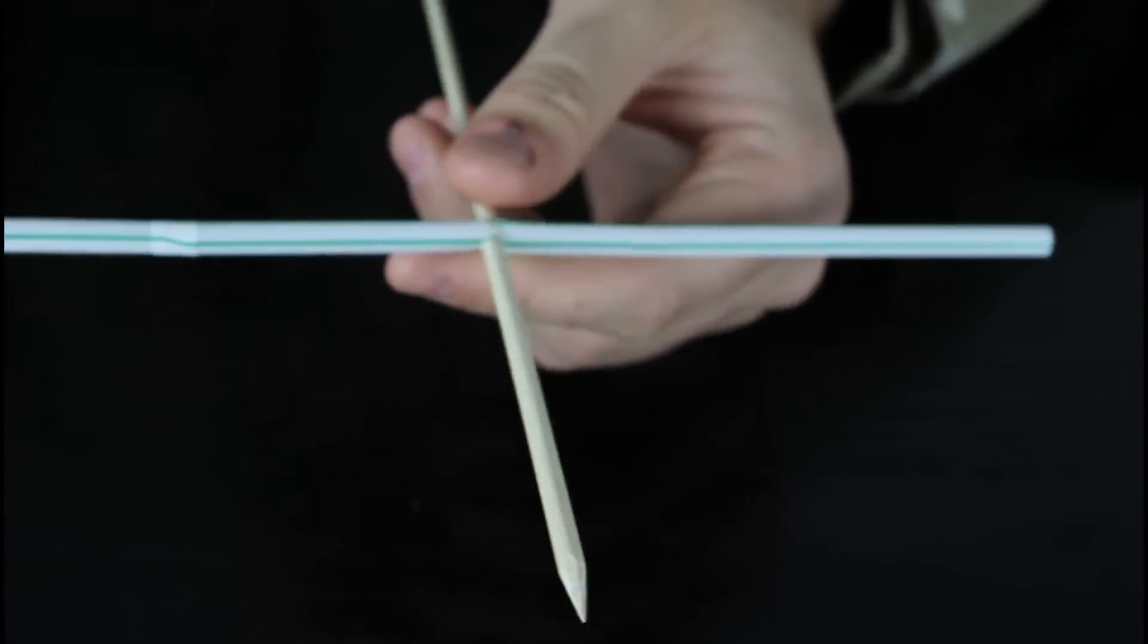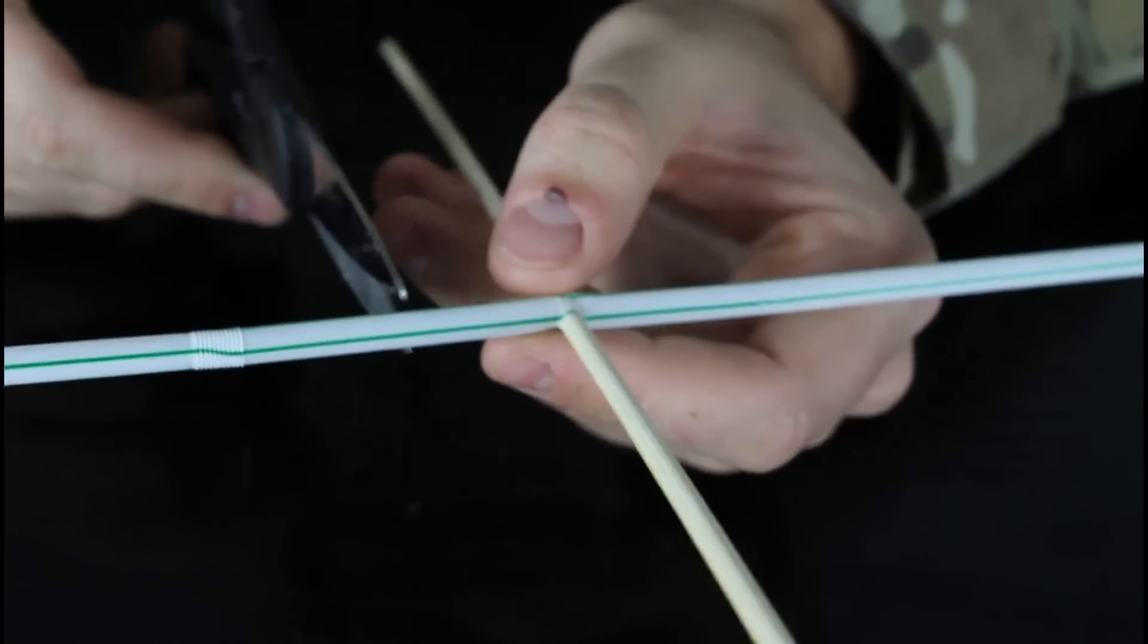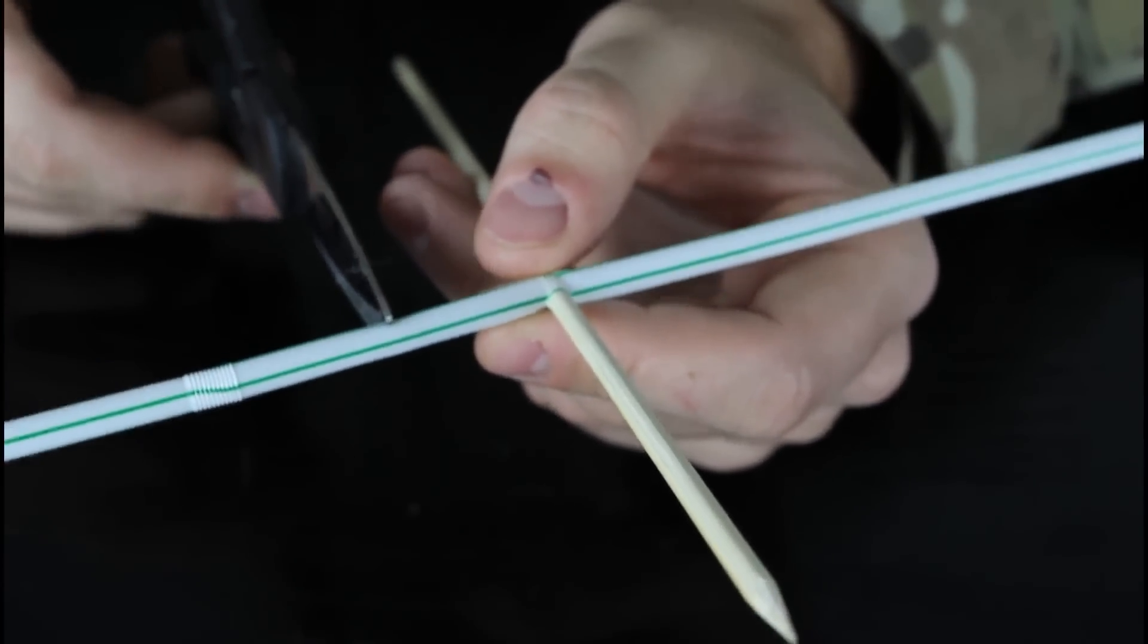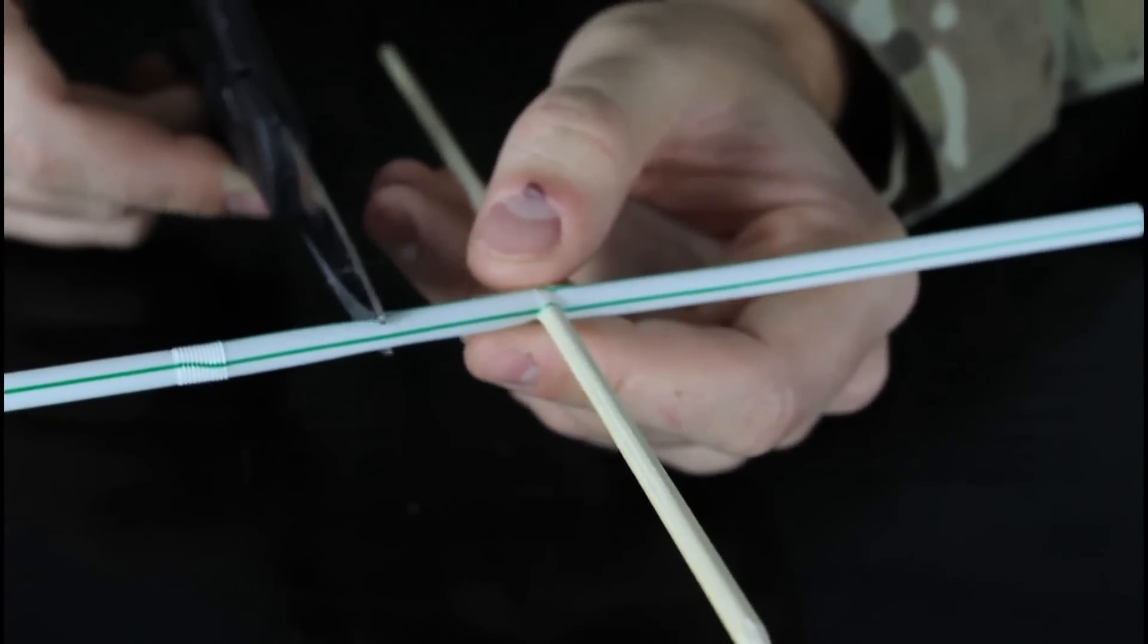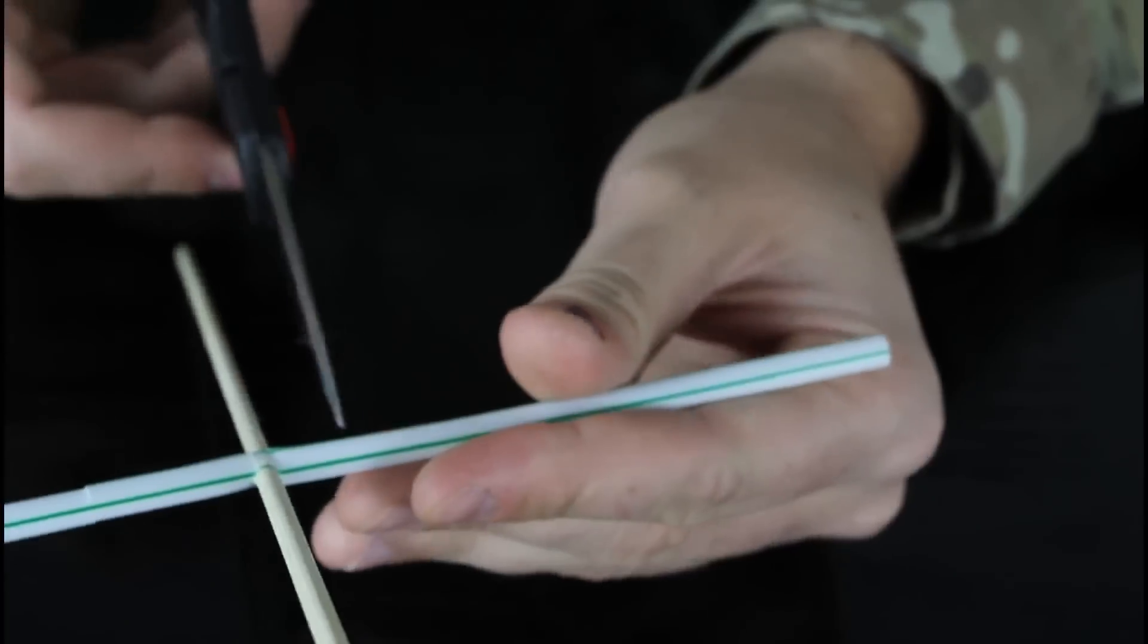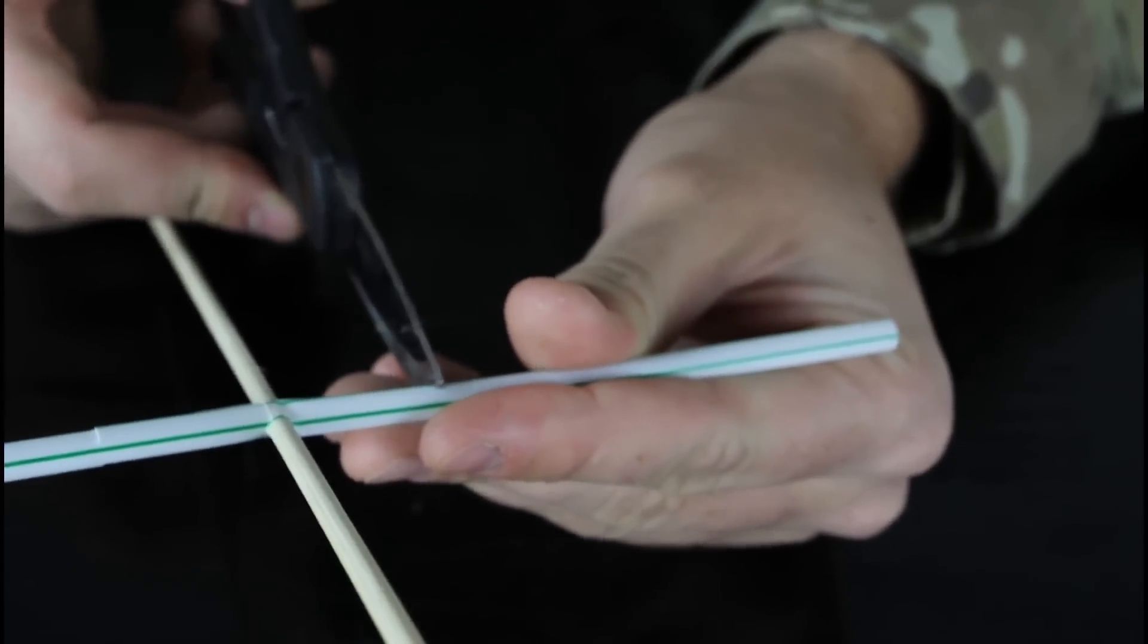Now turn it around, upside down like that, and just cut it on this side. Grab your scissors, cut it on this side and about the same on that side.